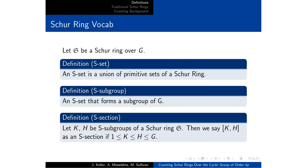Some helpful additional vocabulary: an S-set is a union of those primitive sets or classes, an S-subgroup is an S-set that's a subgroup of the original group, and an S-section is just a chain of those S-subgroups. We will say that an S-section is non-trivial if K is not the trivial subgroup and H is not the whole group.